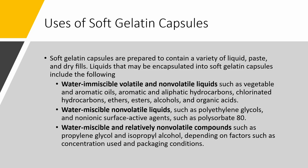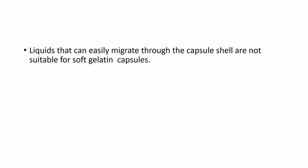The uses of soft gelatin capsules vary. Liquids that may be encapsulated include water-immiscible volatile and non-volatile liquids such as oils, hydrocarbons, ethers, esters, alcohols, and organic acids. You can also add water-miscible non-volatile liquids such as polyethylene glycols, as well as water-miscible non-volatile compounds like propylene glycol and isopropyl alcohol. Liquids that can pass through the capsule shells are not suitable for gelatin capsules, since leakage constitutes a failure of the dosage form.